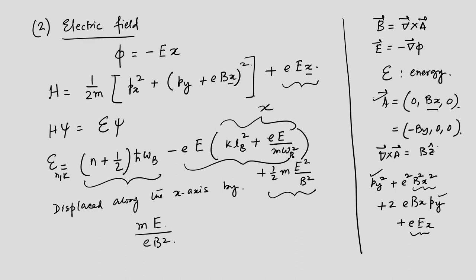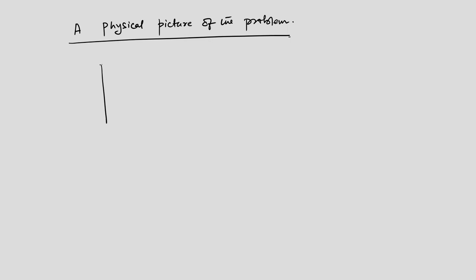So that is what happens when you take spin and the electric field into consideration for a charged particle in crossed electric and magnetic fields. Now let me give you a physical picture. I have a 2D electron gas in a rectangular sample placed in a strong magnetic field.